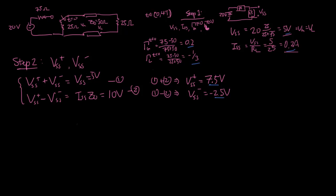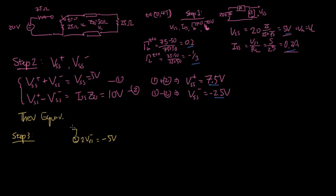Now let's do the Thevenin equivalent approach first. For step three in the Thevenin approach, we draw the Thevenin equivalent circuit. We have the negative wave coming out, so we model that with a generator equal to 2 times VSS minus, which is equal to minus 5 volts. That has an equivalent source impedance of 50 ohms — the transmission line value — and then once we flip the switch, this is connected to a 25 ohm resistor.